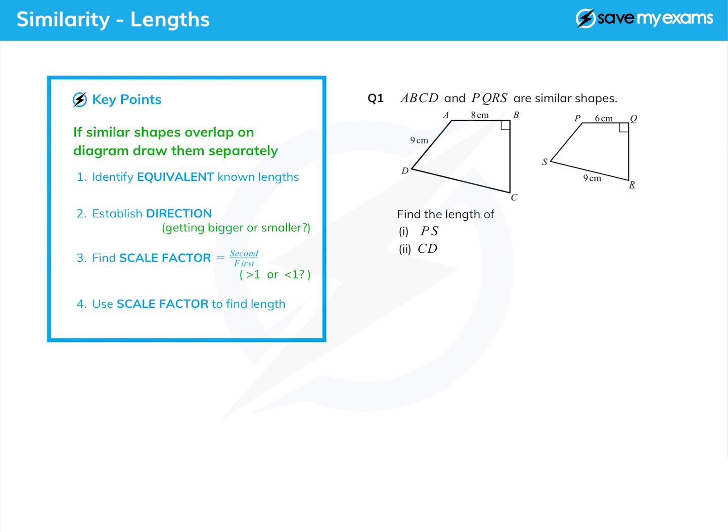So what are we going to do? Well it's a four-step process. We're going to identify the equivalent known lengths so we've got something to work with. For each part of the question we're going to establish which way we're going - is the shape getting bigger or is it getting smaller? And that will tell us whether the scale factor should be less than one or bigger than one. Bigger than one if it's getting bigger, less than one if it's getting smaller.